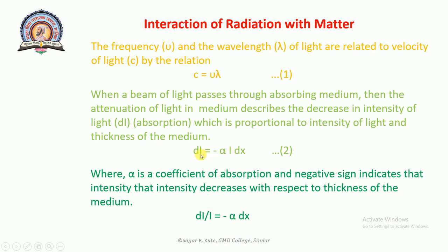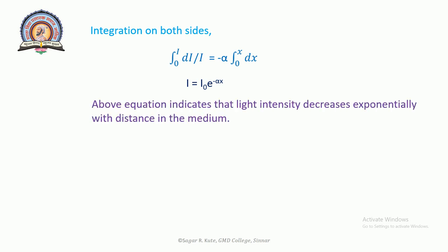Integrating on both sides, integration 0 to I of dI upon I equals minus alpha integration 0 to x dx. This gives I equals I0 e raised to minus alpha x. Above equation indicates that the light intensity decreases exponentially with distance in the medium.